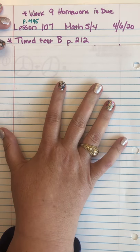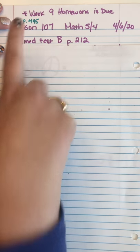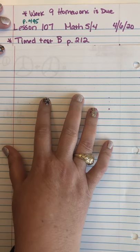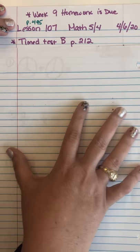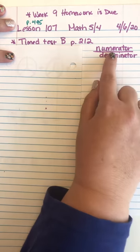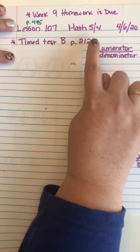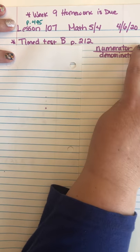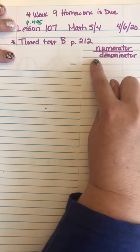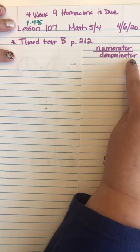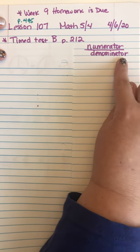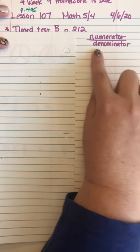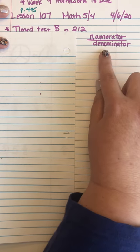Today we're going to be on lesson 107. We're going to be working with adding and subtracting fractions. So we're going to do a quick little reminder on fractions. My top number is called a numerator, my bottom number is called a denominator. We always review this — I know you're probably thinking, why is she reviewing that again?